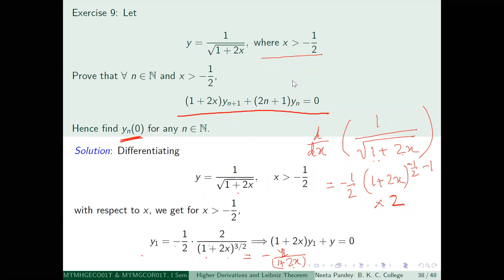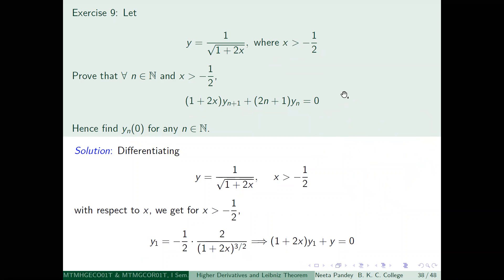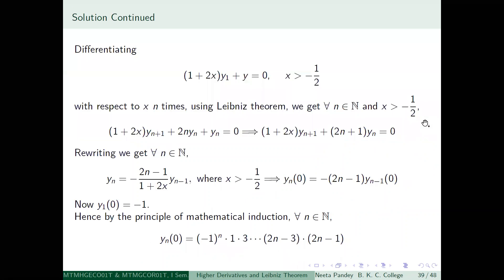This time we have the equation (1+2x)·y₁ + y = 0. We take the nth derivative using Leibniz rule. For the (1+2x)·y₁ term: n choose 0 gives (1+2x)·yn+1, and n choose 1 times the derivative of (1+2x) — which is 2 — gives 2n·yn. Since (1+2x) is a polynomial of degree 1, higher derivatives are zero. Adding the nth derivative of y gives yn.